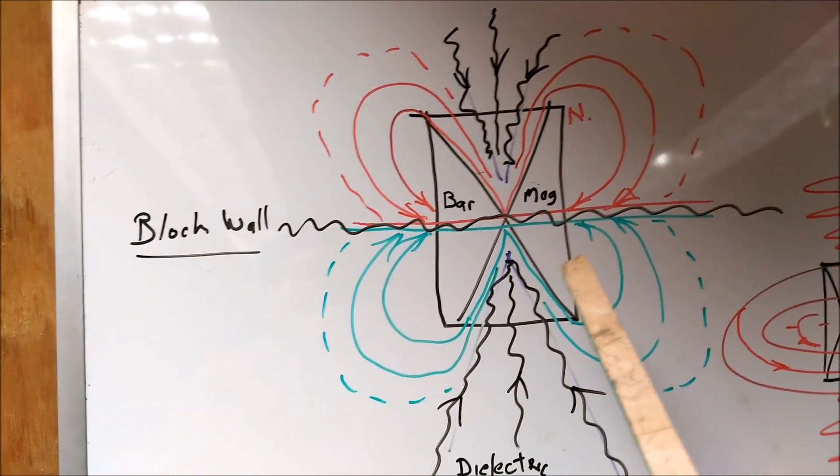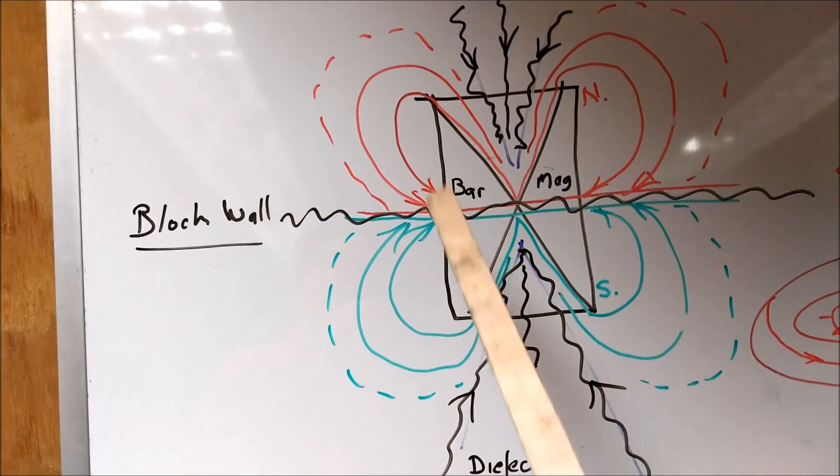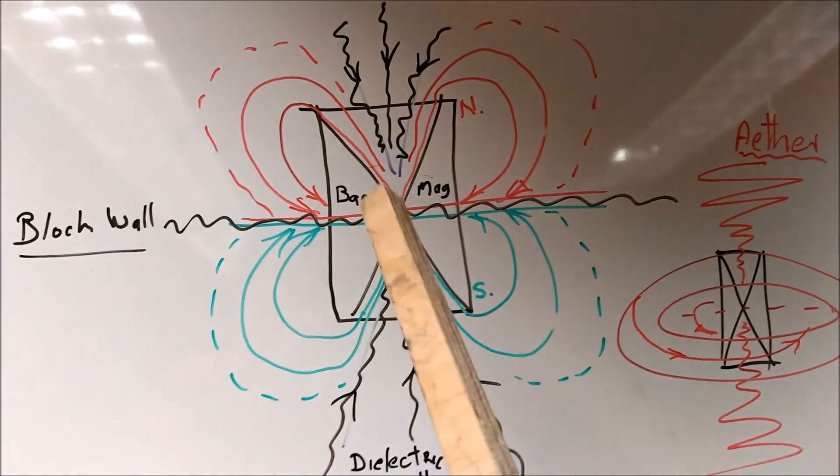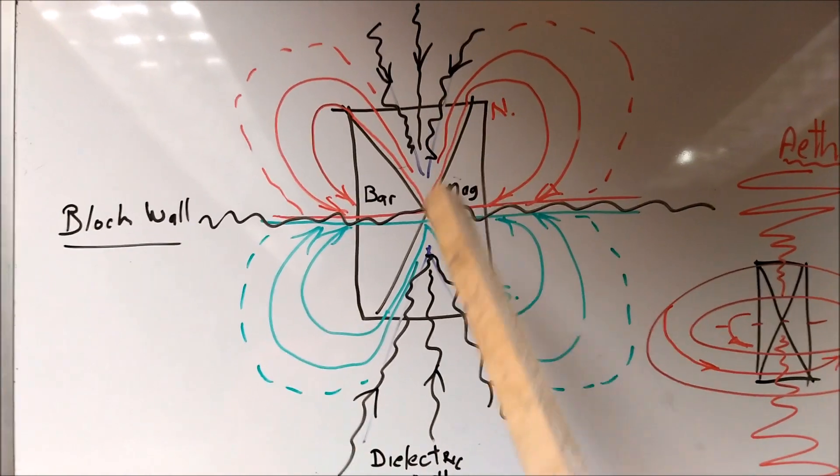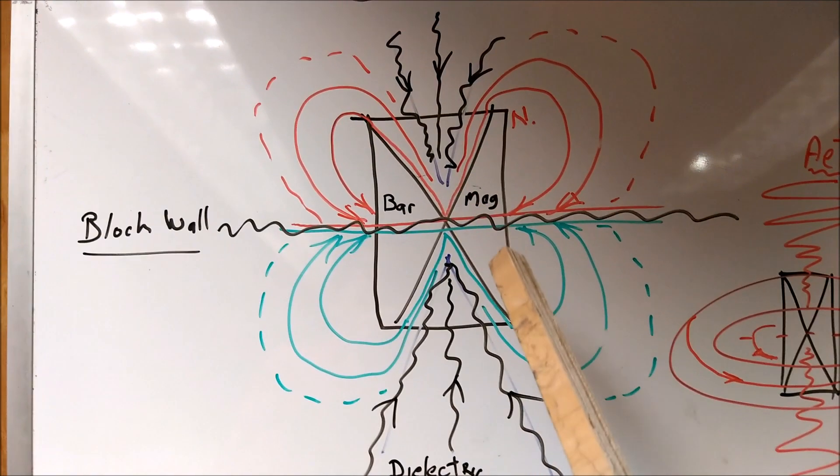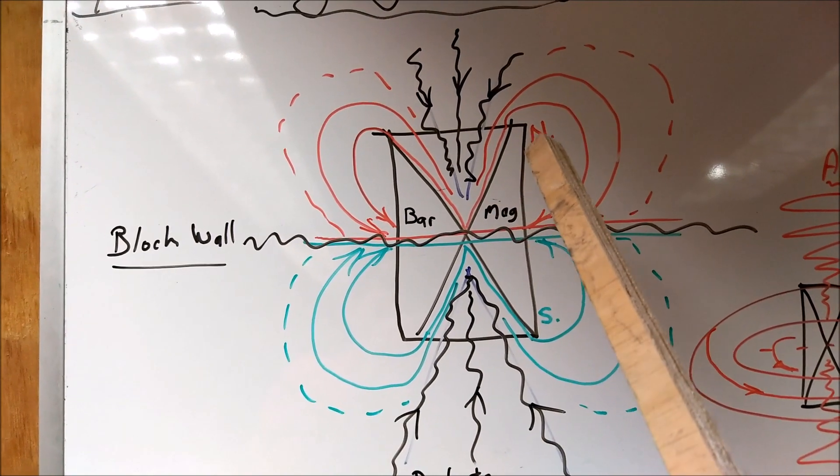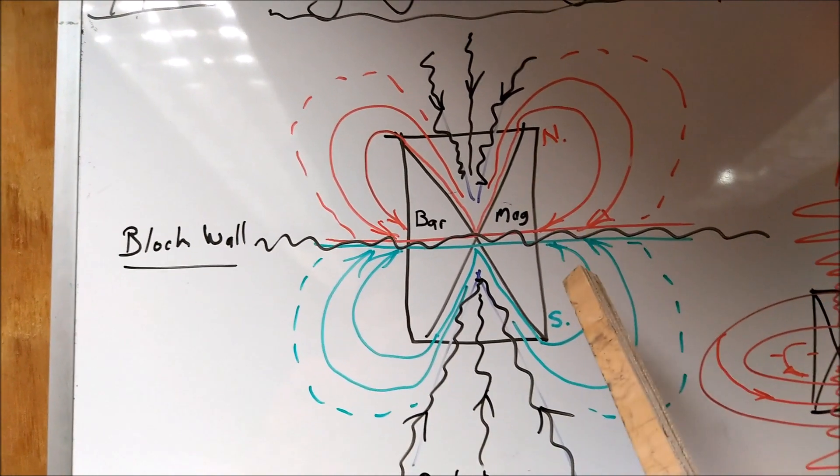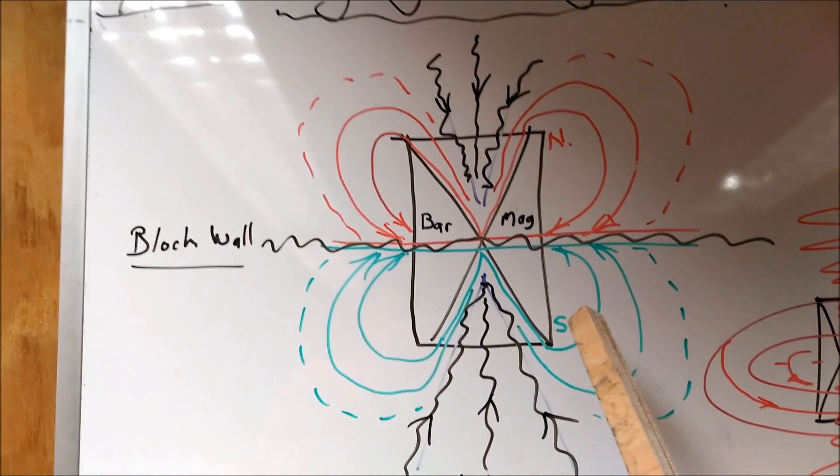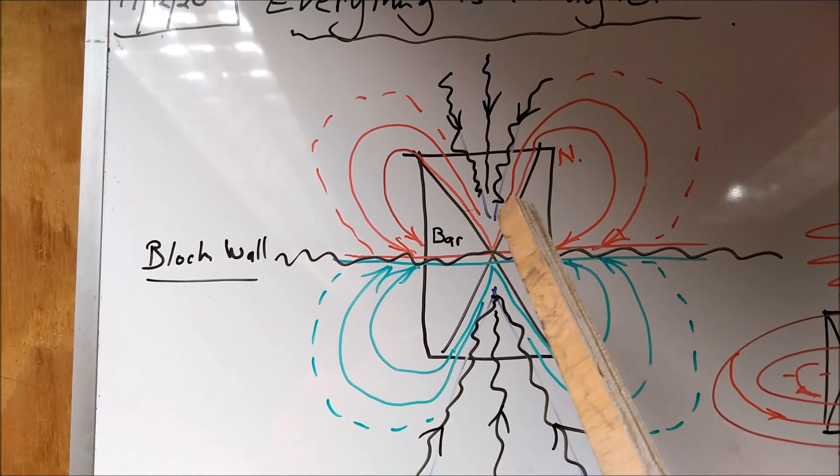We've got a bar magnet here and there's a cross which represents the dielectric and the magnetic. So we've got the north here and the south there, a bar magnet, and coming out of the bar magnet at the north...